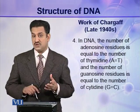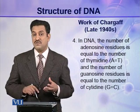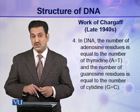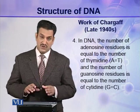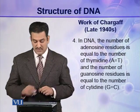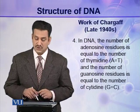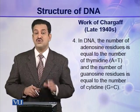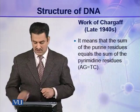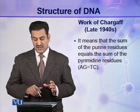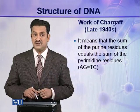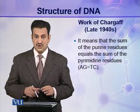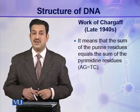The fourth rule is perhaps the most important, as it gave the most important clue to Watson and Crick, who finally described the structure of DNA. This rule states that the number of adenosine residues in DNA is equal to the number of thymidine residues, and similarly, the number of guanosine residues is equal to the number of cytidine residues. That is, A is always equal to T and G is always equal to C. This means the sum of purines equals the sum of pyrimidines, because A and G are purines and T and C are pyrimidines.